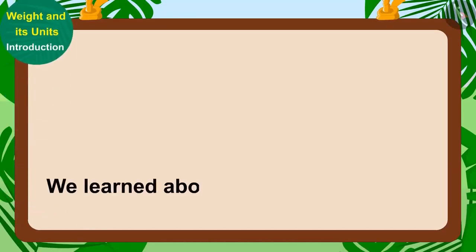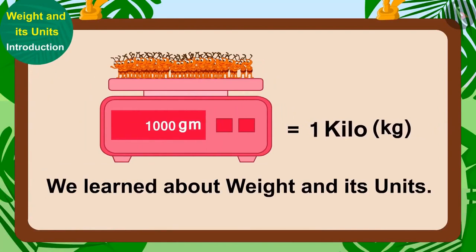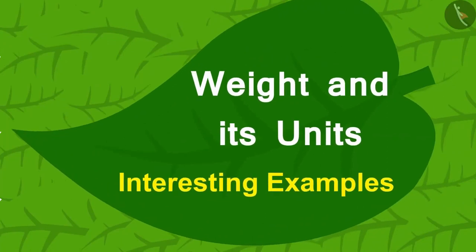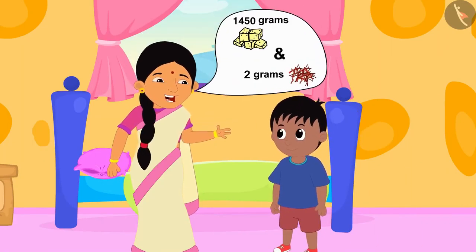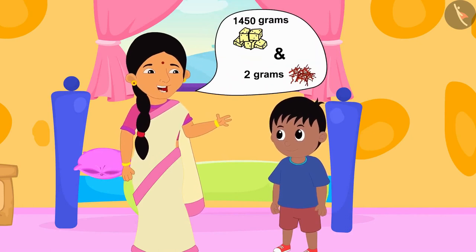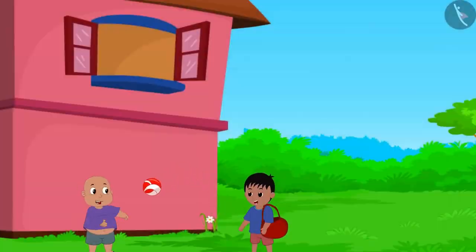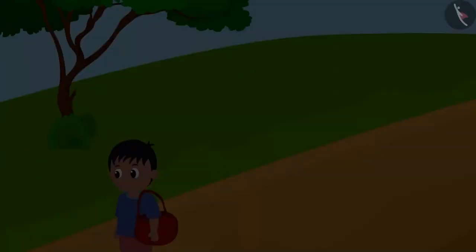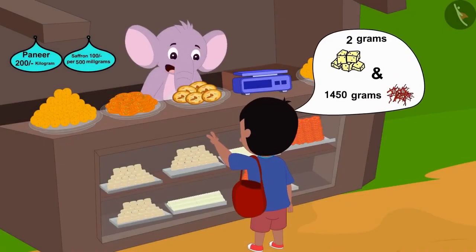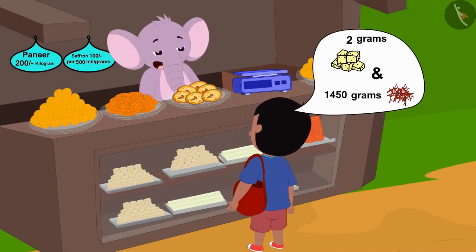In the last video, we learned about weight and its units. In this video, we will learn more through interesting examples. Raju's mother asked him to buy 1450 grams of paneer and 2 grams of saffron from Appu's shop. But Raju told Appu: I want 2 grams of paneer and 1450 grams of saffron — mixing up the units.